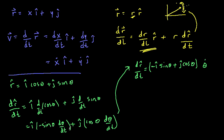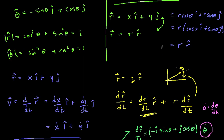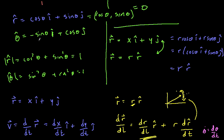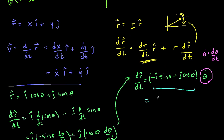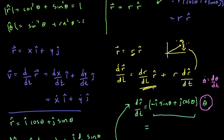Remember, theta-dot is dθ/dt — I've factored that out. Now, what does this remaining term look like? Recall from the previous section that theta-hat equals minus sine theta times i-hat plus cosine theta times j-hat. So dr-hat/dt equals theta-hat times theta-dot.